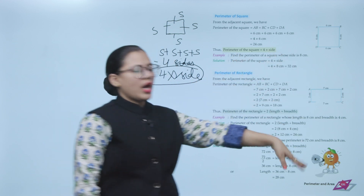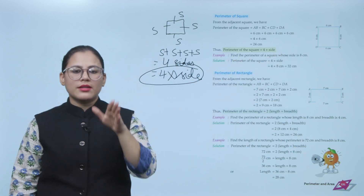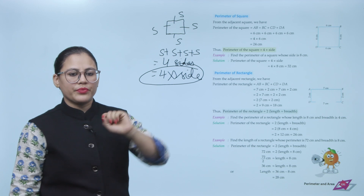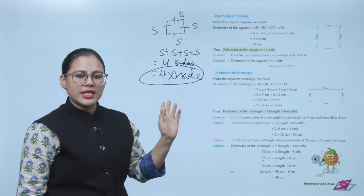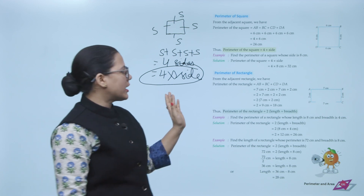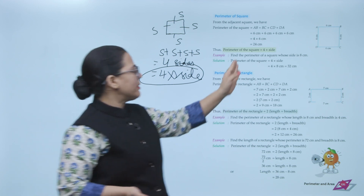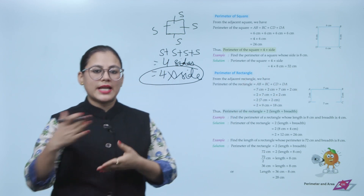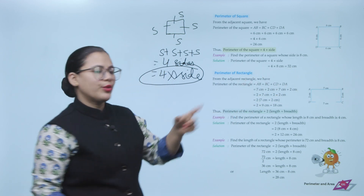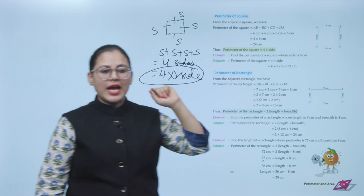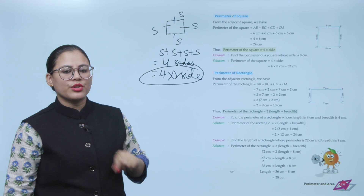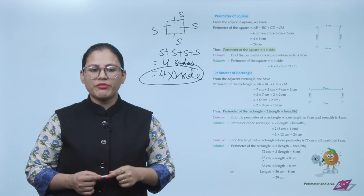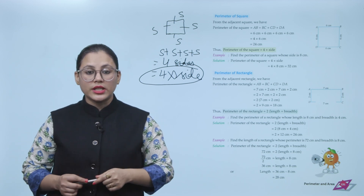Example: Find the perimeter of a square whose side is 8 centimeters. Simply apply the formula: perimeter = 4 × side = 4 × 8 = 32 centimeters.